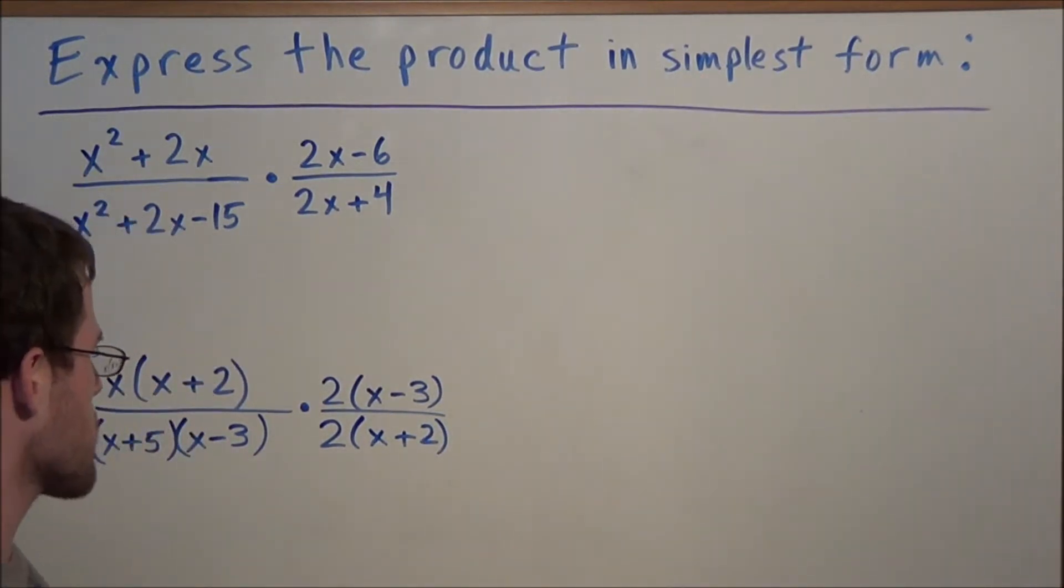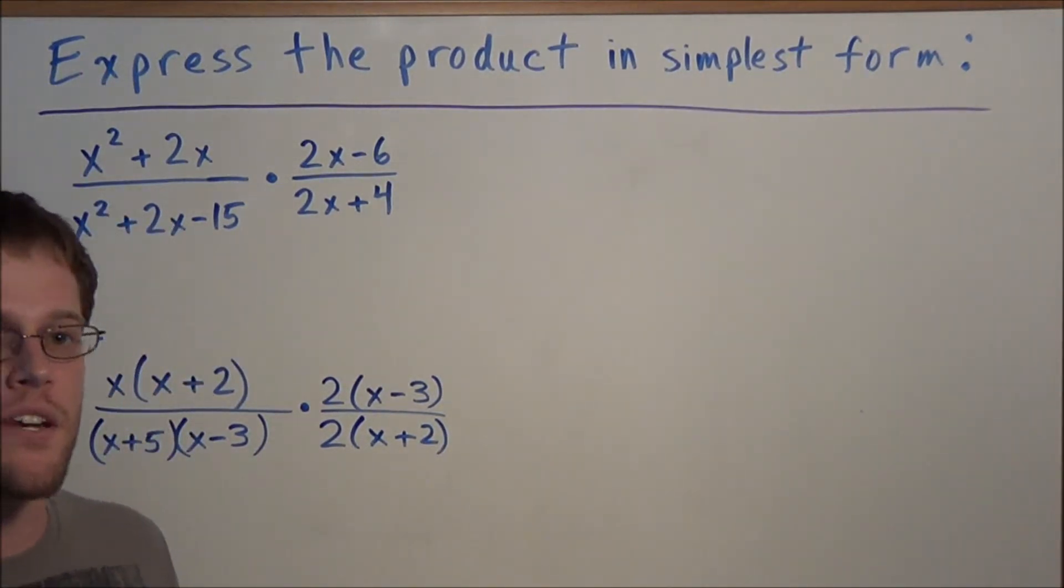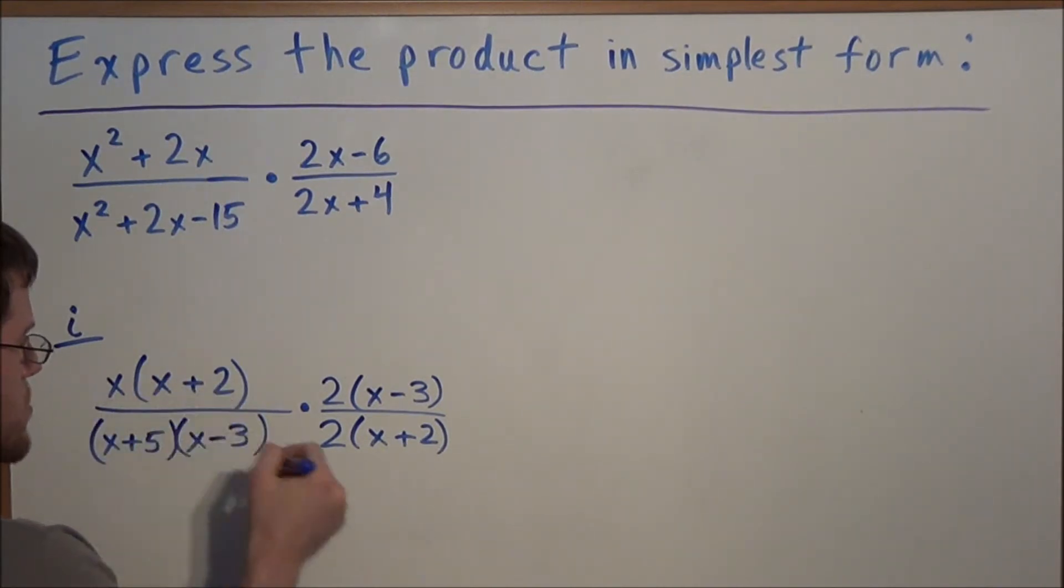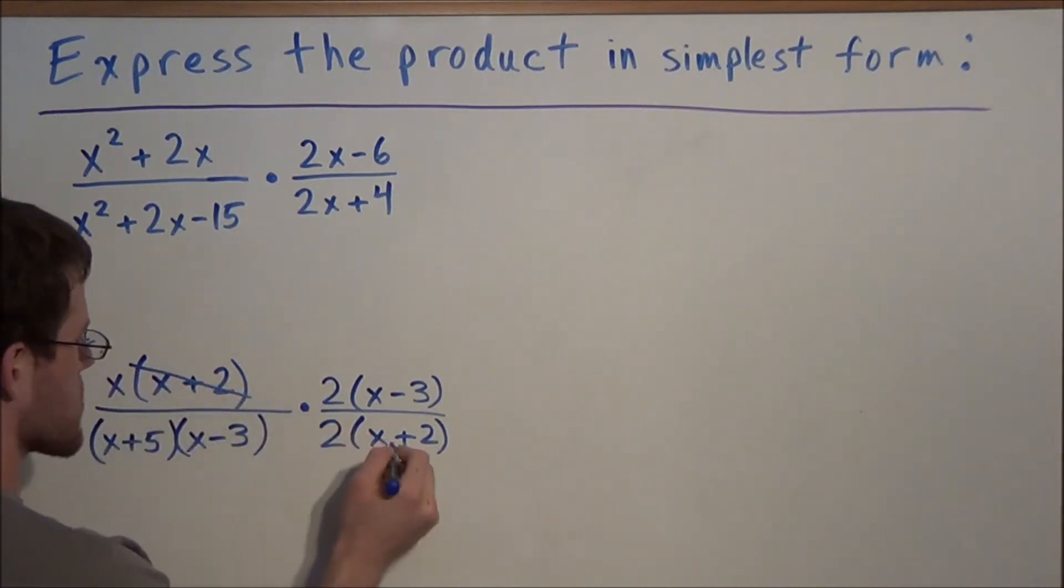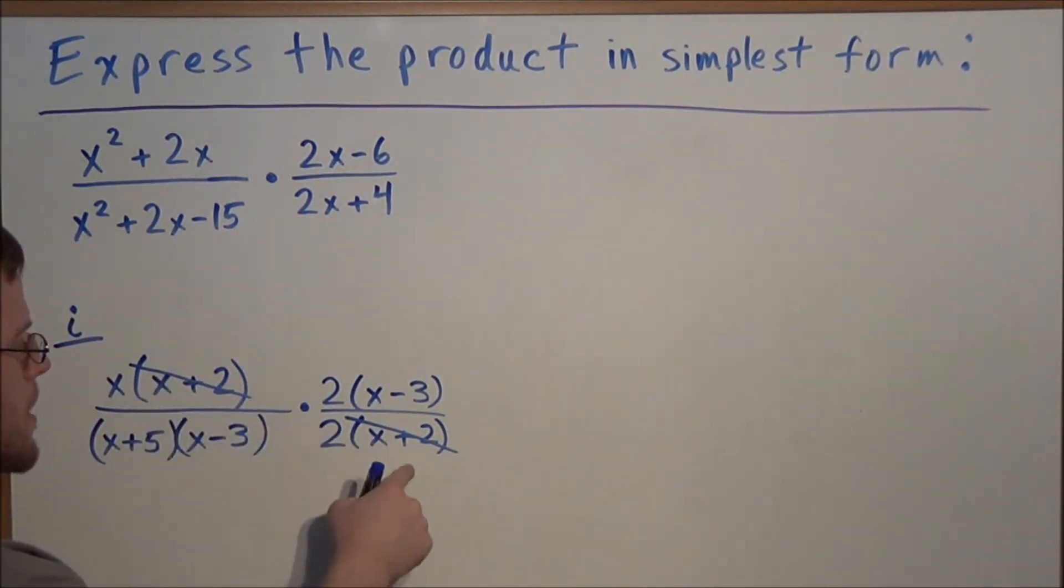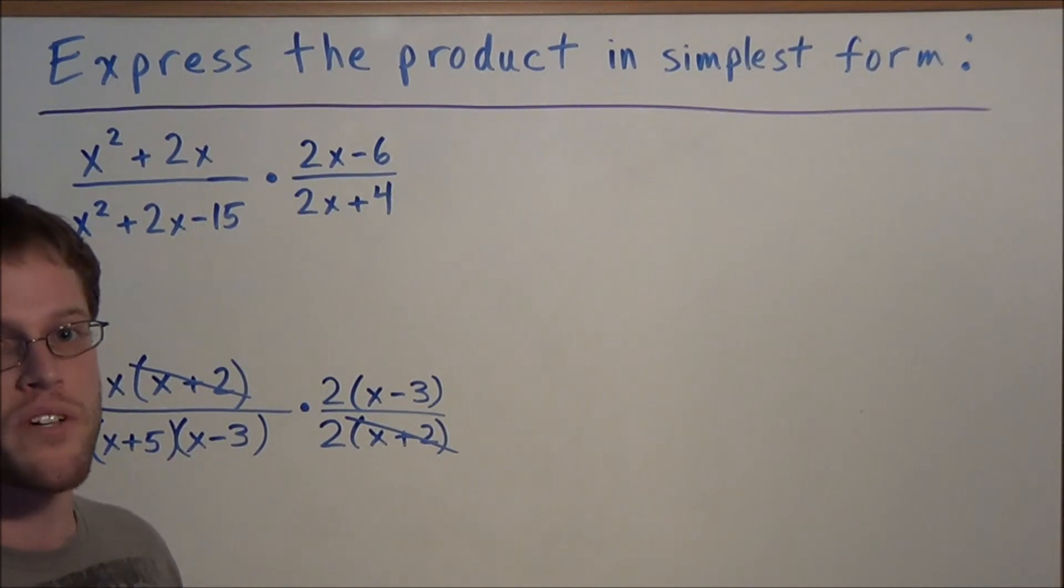So now at this stage of the problem we want to eliminate or cross out common factors between the numerators and denominators. So we look at the first few terms and notice we have x plus 2 in the numerator and x plus 2 in the denominator. We could cross these out. It doesn't matter that the x plus 2's show up in different fractions as long as you're crossing out a factor between the numerator and denominator. It doesn't matter which fraction you're doing it from because it's all attached by multiplication.